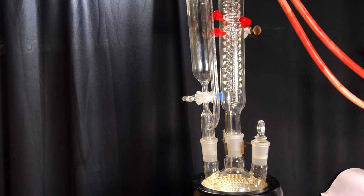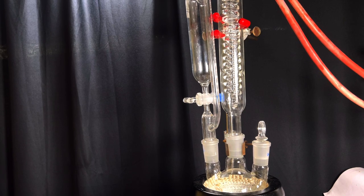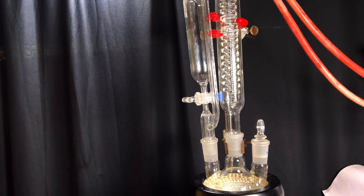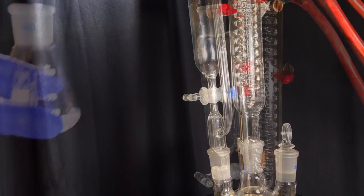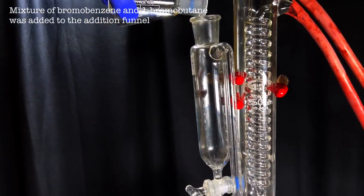An addition funnel and a Dimroth condenser were attached to two of the necks of the round bottom flask and the third neck was closed with a penny head stopper. The mixture of bromobenzene and bromobutane was added to the addition funnel.